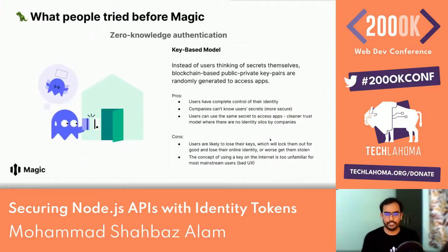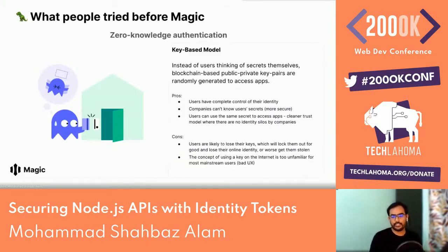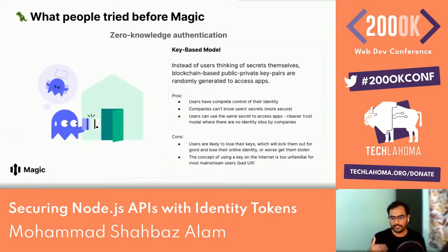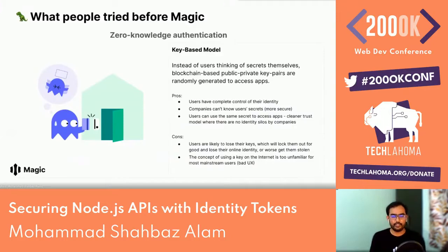What people tried before Magic is zero-knowledge authentication — a key-based model. Instead of users thinking of secrets themselves, blockchain-based public-private key pairs are randomly generated to access apps. The pros: users have complete control of their identity, and companies don't know the user's secret — a more secure model. Users can use the same secret across apps, with no identity silos. The cons: users are likely to lose their keys, which locks them out and could cost them their online identity.